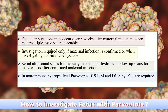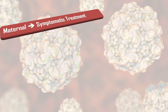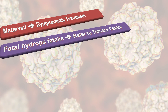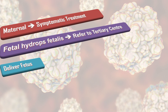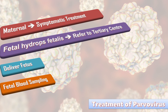If non-immune hydrops is found, fetal Parvovirus B19 IgM and DNA by PCR are required. For treatment, we treat maternal symptoms first. If the fetus develops hydrops, refer the mother to tertiary care and deliver the fetus if the gestational age permits, with fetal blood sampling and conservative management.